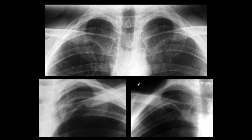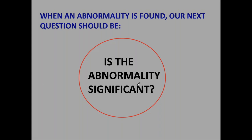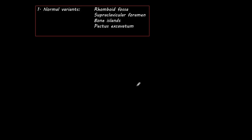The conditions that offer non-significant abnormalities are normal variants. They usually involve the skeleton of the chest. I mark here four of them — in my opinion, the more common: the rhomboid fossa that we already mentioned, the supraclavicular foramen, bone islands, and pectus excavatum. The supraclavicular foramen is a small orifice in the middle third of the clavicle, either right or left, and we'll see it better in the coned-down view.